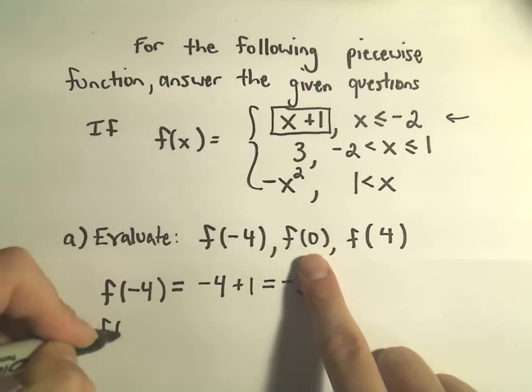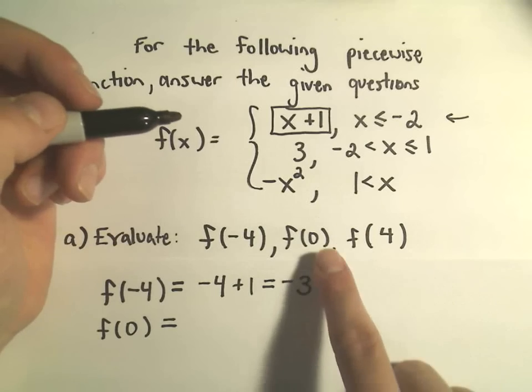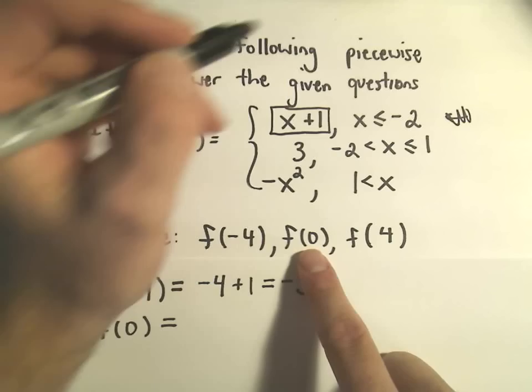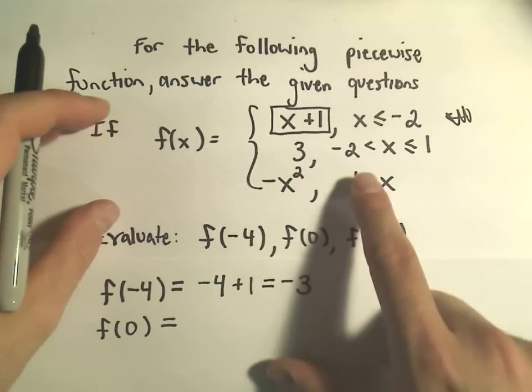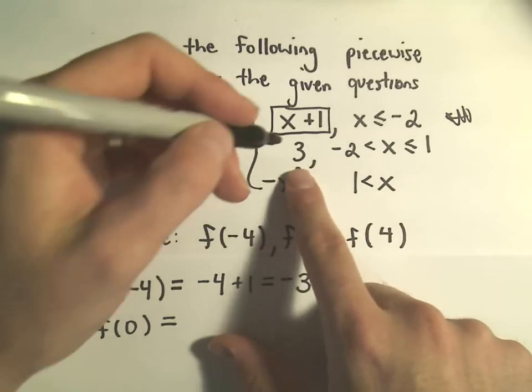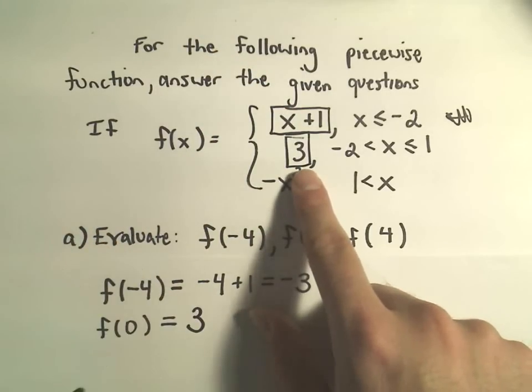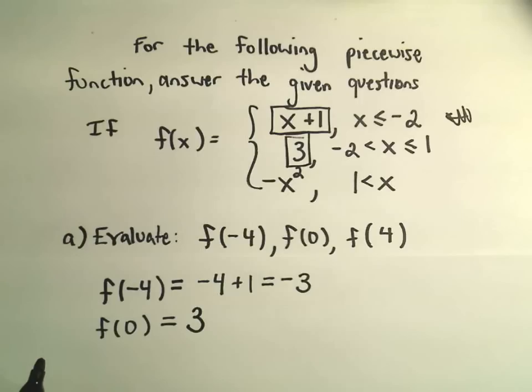If we evaluate f of 0, so again, I have to find the interval which 0 falls into. Well, 0 is greater than negative 2 but less than or equal to 1. So now I'm going to use the second formula. There's really nowhere to throw an x in there, so it says you just get the value 3 out. So easy it's confusing because there's no arithmetic to actually do.